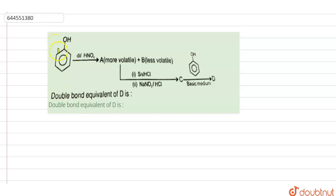This phenol is reacting with dilute HNO3 and producing two products, from which A is more volatile and B is less volatile.